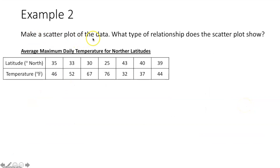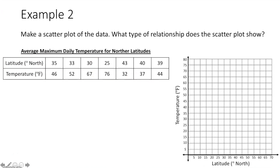Example two says: make a scatter plot of the data. What type of relationship does the scatter plot show? We have a table with a set of ordered pairs to graph. The temperature depends on the latitude, so latitude is the independent variable on the x-axis, and temperature in degrees Fahrenheit is the dependent variable on the y-axis. We plot each point: 35, 46 — go over 35 on the x-axis, up 46 on the y-axis; 33, 52 — go over 33, up 52; 30, 67 — go over 30, up 67.